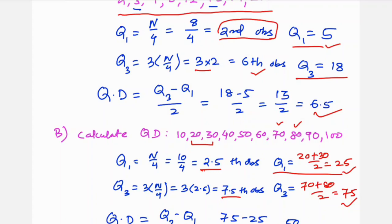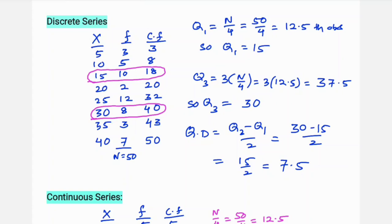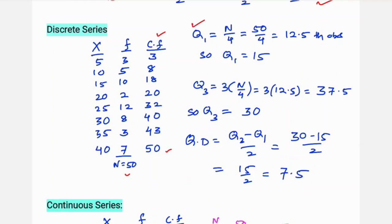For discrete series: X values are 5, 10, 15, and frequencies are given. The cumulative frequency is 3, then 3 plus 5 is 8, 8 plus 10 is 18, 18 plus 2 is 20, 20 plus 12 is 32. Total n is 50. Q1 is n by 4, which is 50 by 4 equals 12.5. Looking at cumulative frequency, 12.5 falls at 3, 8, 18, so the related observation is 15. So Q1 is 15.